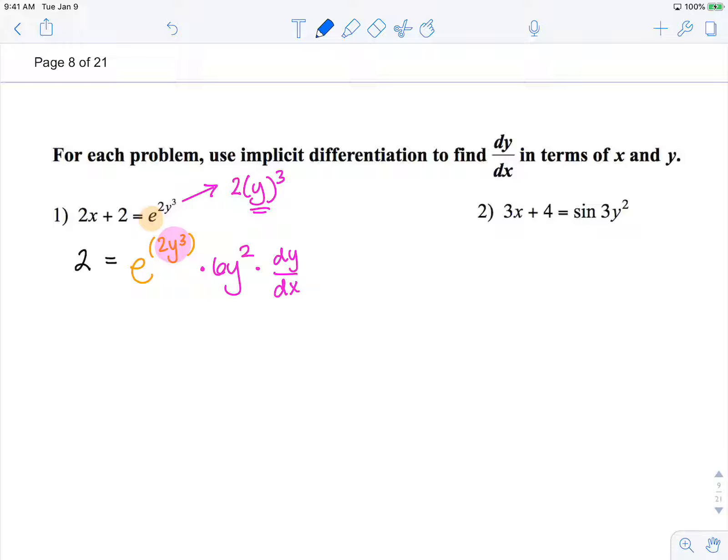to divide these two terms to the other side. 2 over 6y squared e to the 2y cubed equals dy/dx.